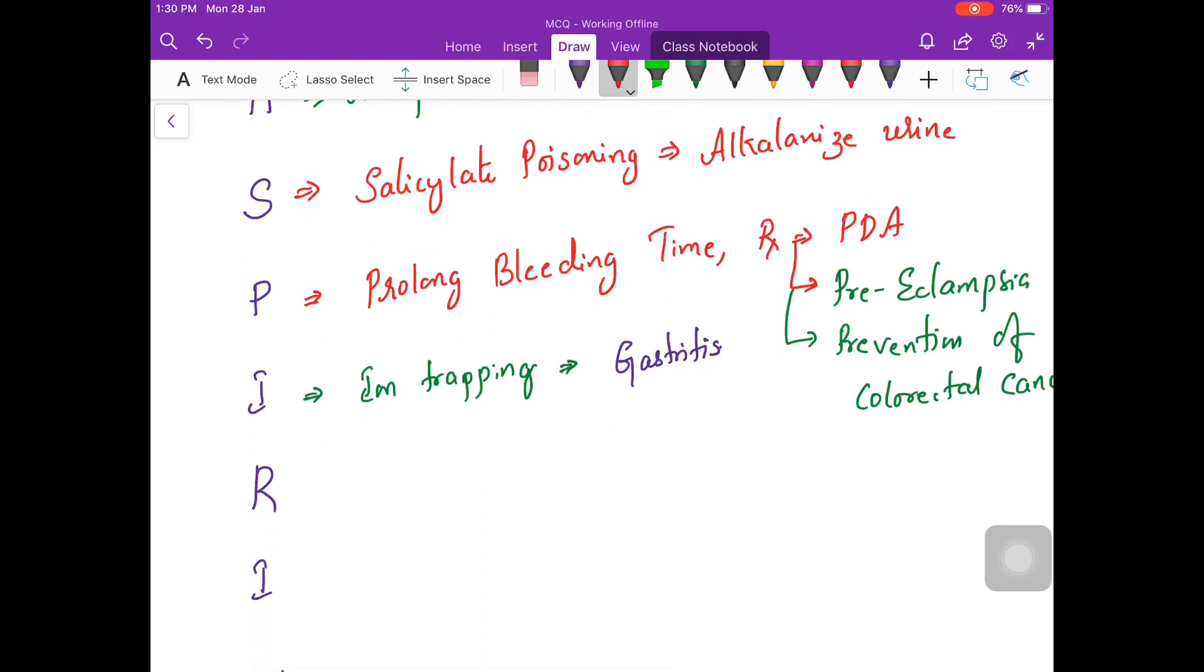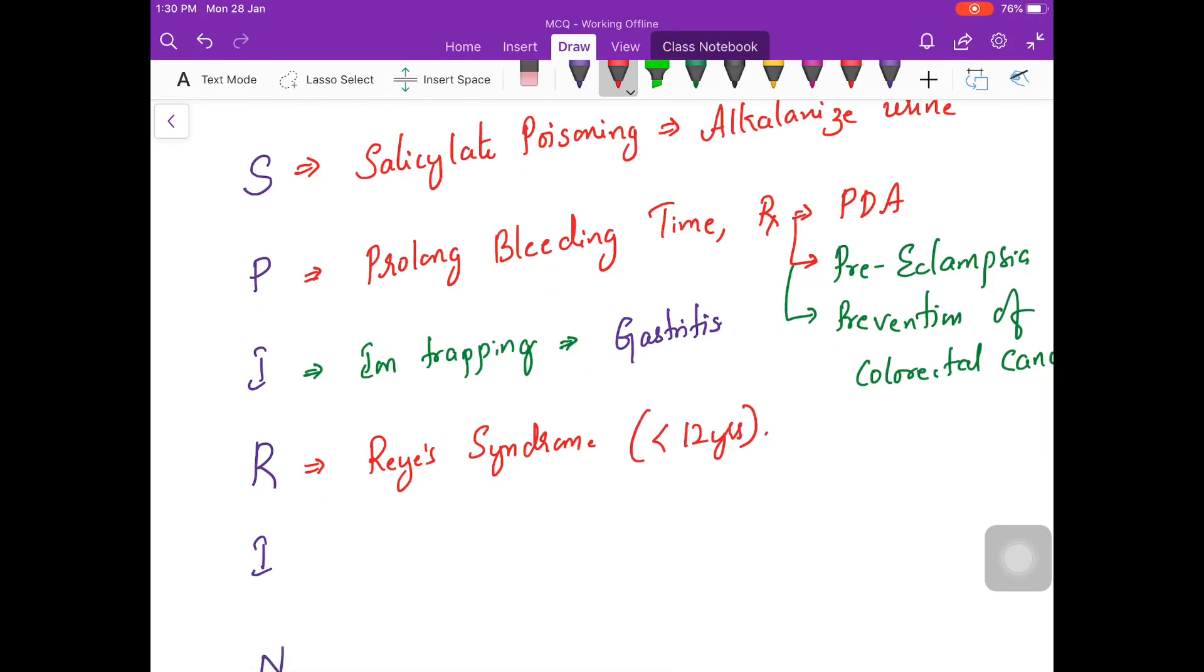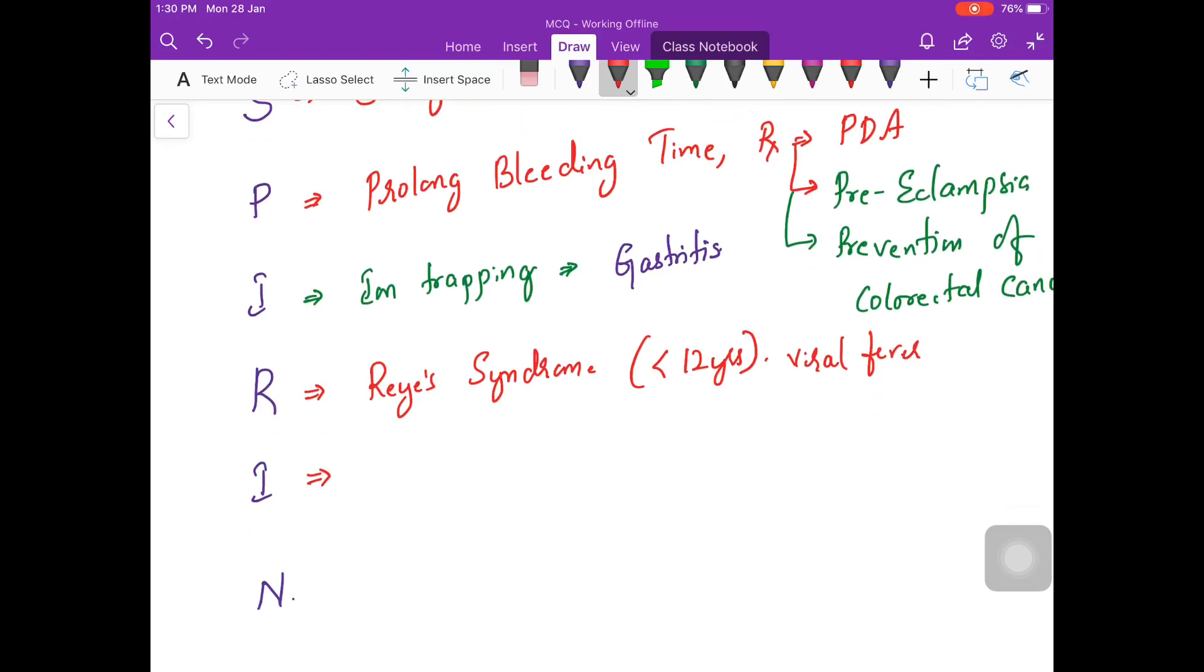Now it also causes something called Reye's syndrome. Reye's syndrome is seen if you use aspirin in less than 12 year old children. So Reye's syndrome is seen if you use this in less than 12 year old children for viral fever.